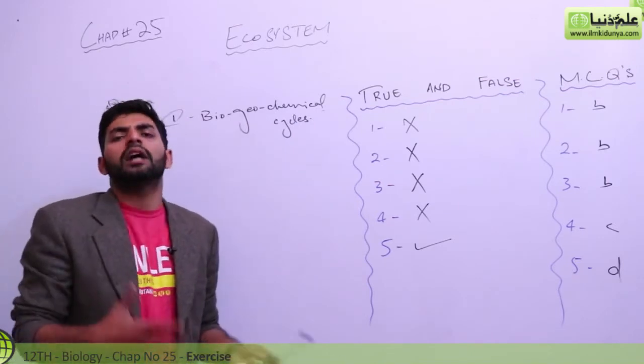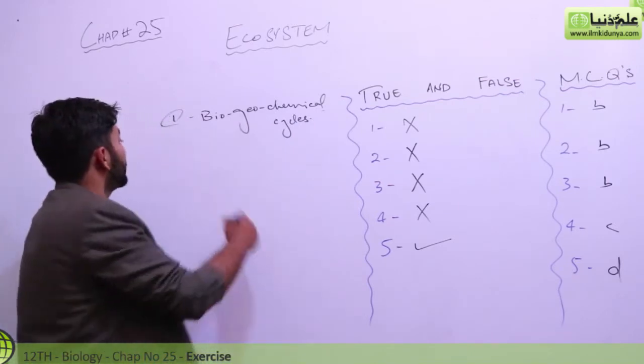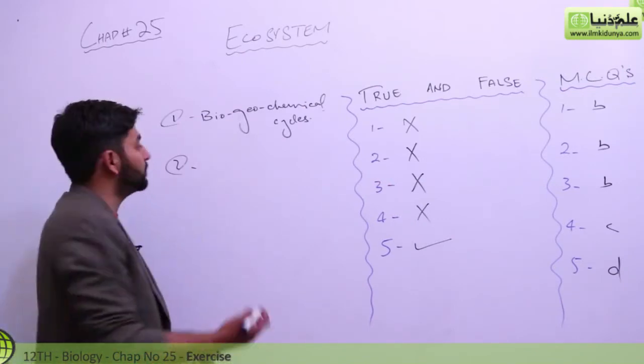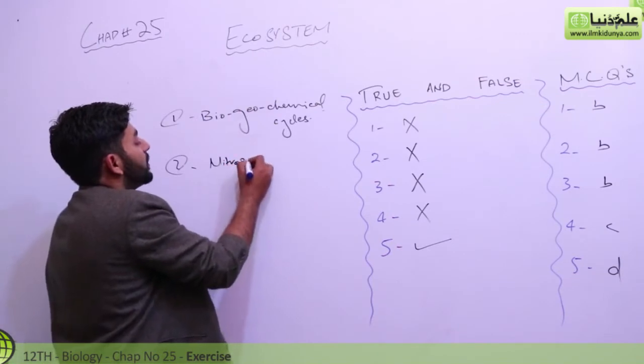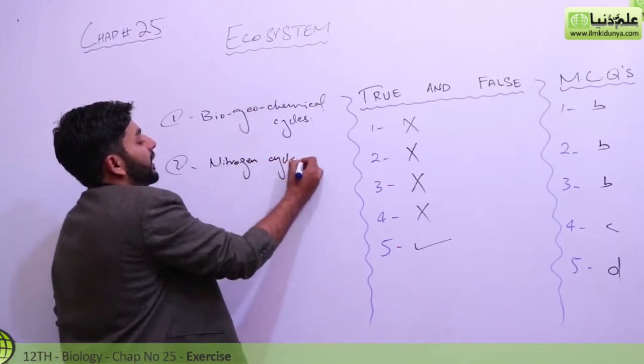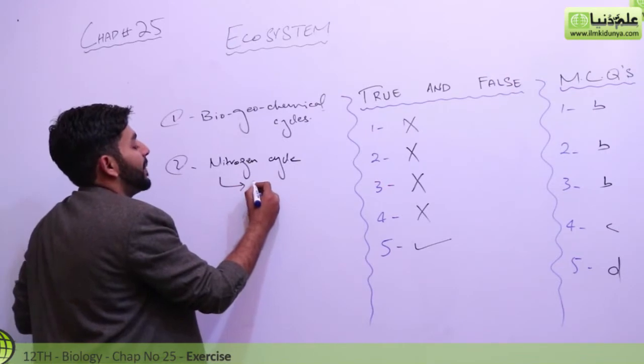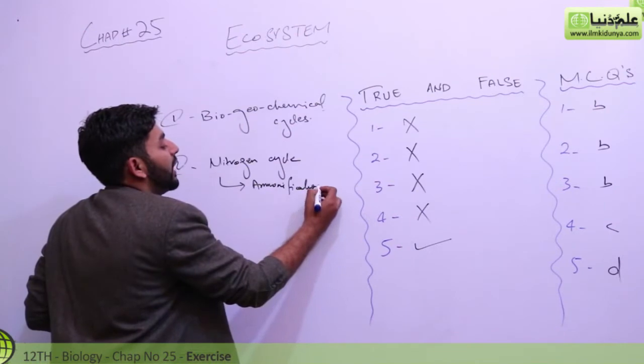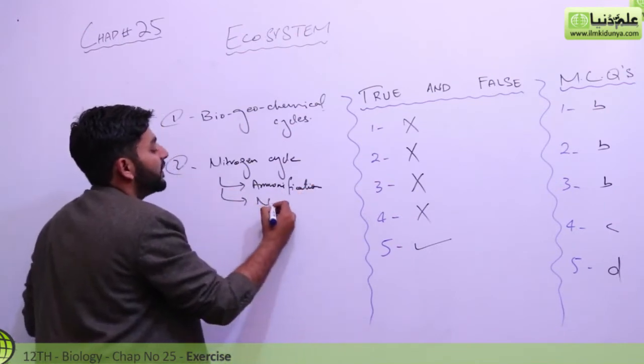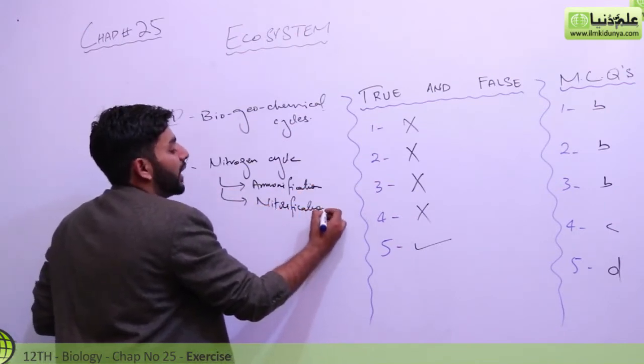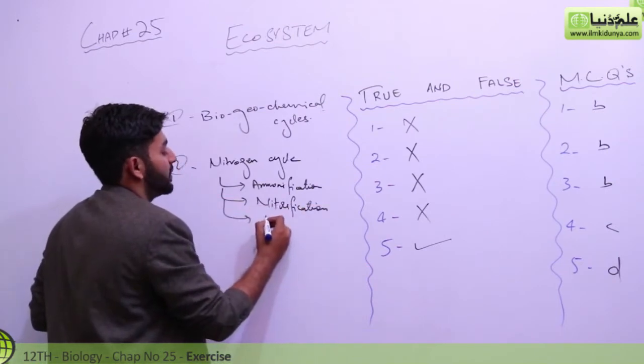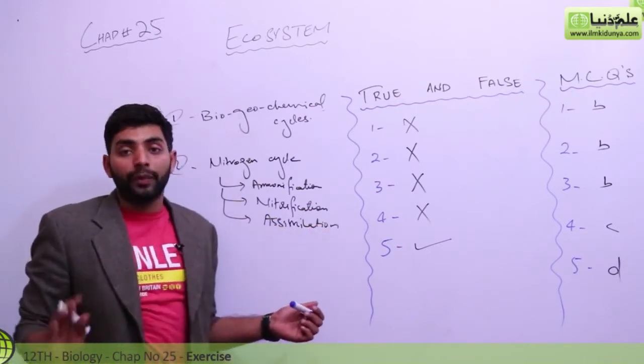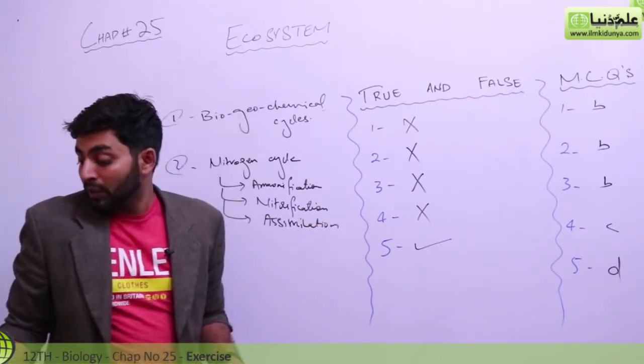Next question: sketch the main steps in nitrogen cycle. Which main steps have we discussed? First we have ammonification, then nitrification, after that the third step is assimilation, and denitrification is the last step. It is not in the book but you should remember to keep it.